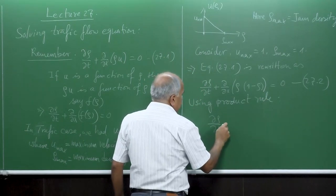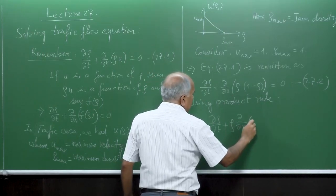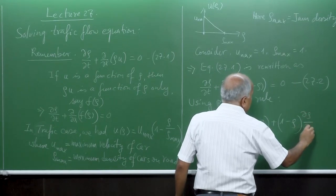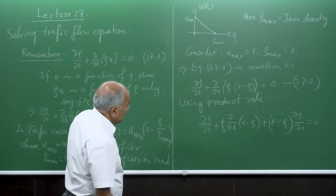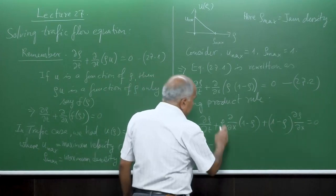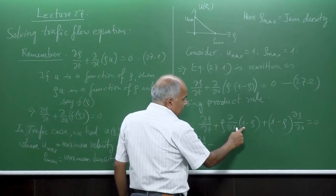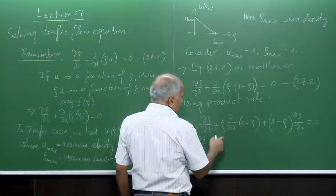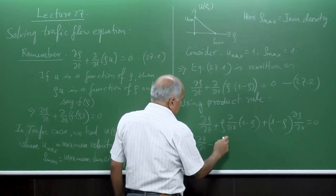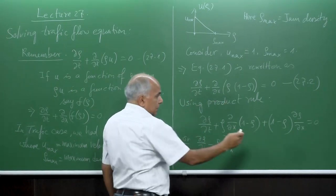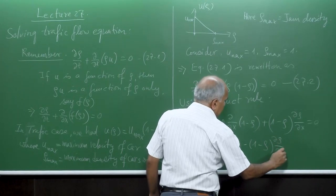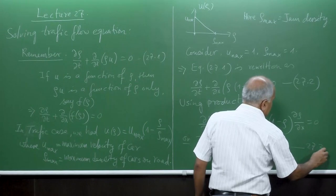Applying the product rule to equation 27.2, we get: del rho by del t plus rho times del by del x of (1 minus rho) plus (1 minus rho) times del rho by del x equals 0. Simplifying — del by del x of 1 is 0, and the derivative of rho gives del rho by del x — we arrive at del rho by del t plus (minus 1 plus 2 rho) del rho by del x equals 0. Rearranging gives equation 27.3: del rho by del t equals minus (1 minus rho) del rho by del x.